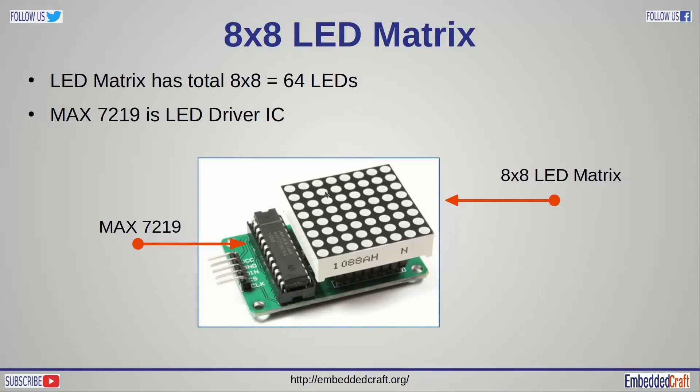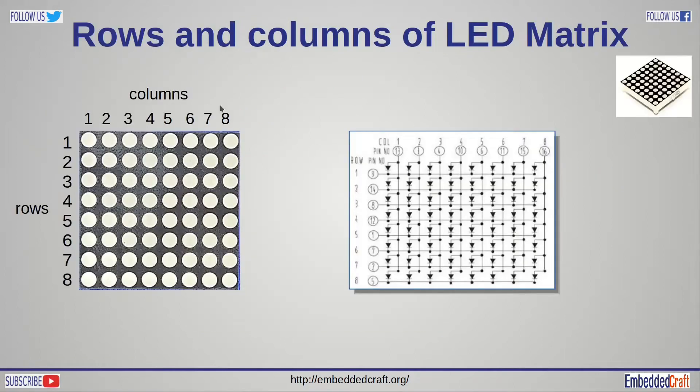In generic module, we have LED matrix and Max 7219 IC. Let us see how LED matrix works. LEDs are organized into 8 columns and 8 rows. LEDs connected at intersection of each row and column.